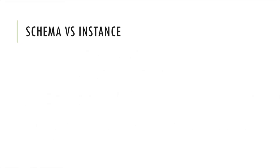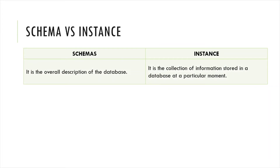Schema is the overall description of the database — it includes physical schema, logical schema, and view schema. An instance is a collection of information stored in a database at a particular moment. Data in the database changes frequently through SQL and PL/SQL operations, so the instance changes frequently.